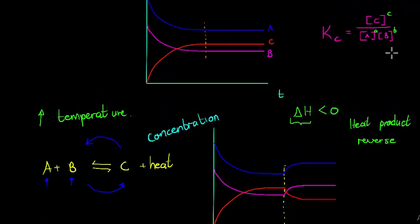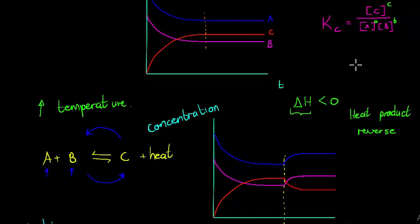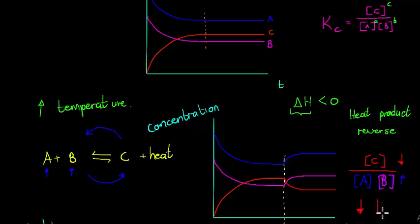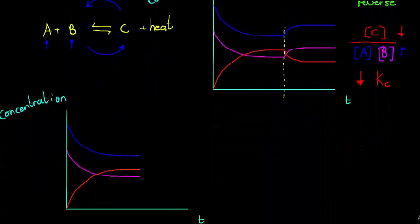Now considering the KC value: A and B were increased while C was decreased. Since KC equals concentration of C divided by concentrations of A and B, if I decrease the numerator and increase the denominator, I am decreasing the KC value. So yes, the KC value is affected by a change in temperature — it decreases for an exothermic reaction.